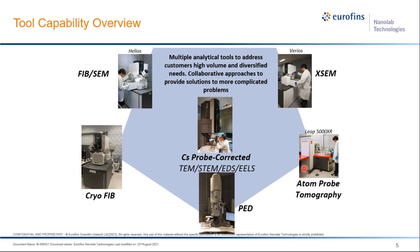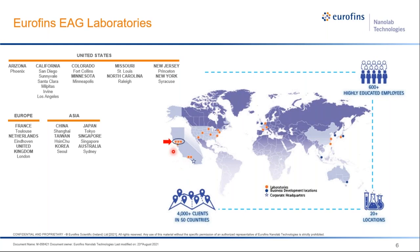Nanolab is part of Eurofins EAG Laboratories. EAG Laboratories has more than 20 locations across seven countries around the world, with more than 600 highly educated employees providing more than 40 techniques and working with over 4,000 clients in 50 countries.